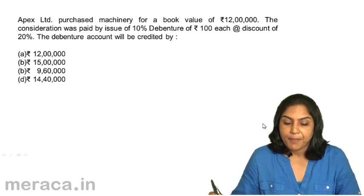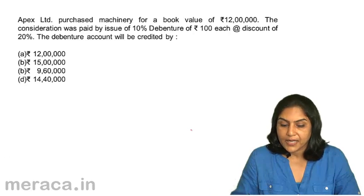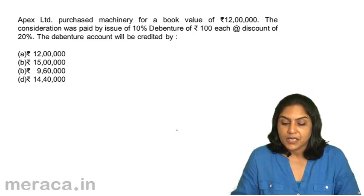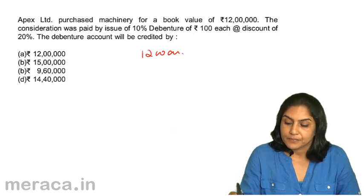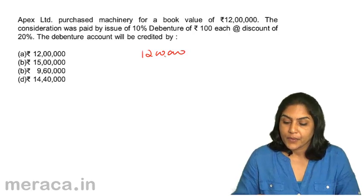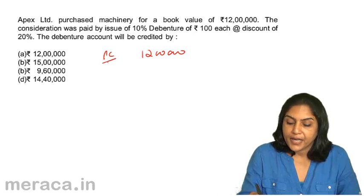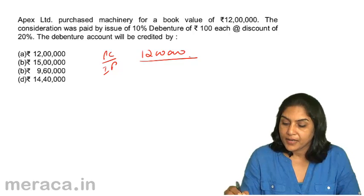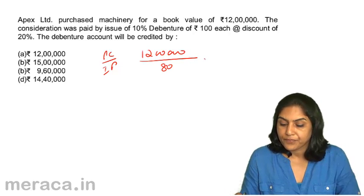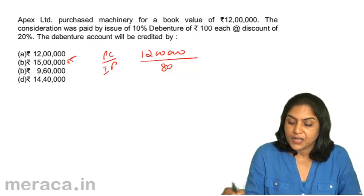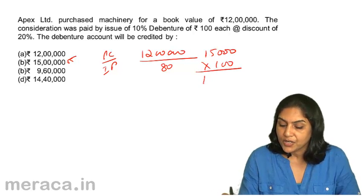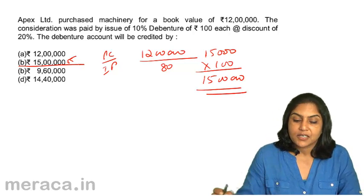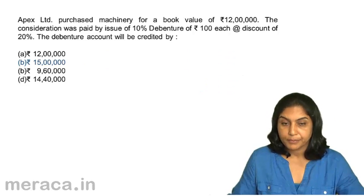Next, Apex Limited purchased machinery for a book value of 12 lakhs. The consideration was paid by the issue of 10% debentures of ₹100 each at a discount of 20%. The debenture account will be credited by the issue price, that is 12 lakhs divided by 80%, giving us 15,000 debentures of ₹100 each — therefore 15 lakhs. So, the correct answer is B: 15 lakhs.